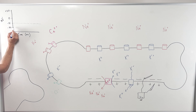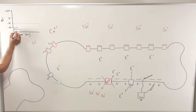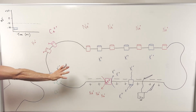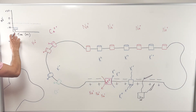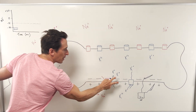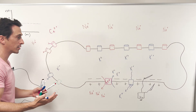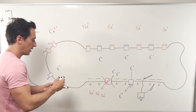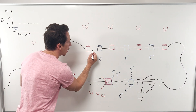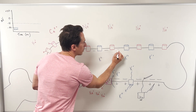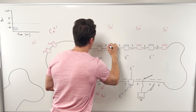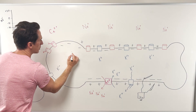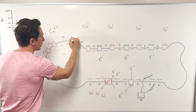This charge difference of around negative 70 millivolts is called the resting membrane potential. 'Resting' because the neuron is not doing anything — it's not firing off, not sending a signal, it's at rest. 'Membrane potential' because the charge difference is at the membrane and has the potential to do something, to send a signal. So inside the neuron is negative 70 — slightly negative — compared to outside the neuron.